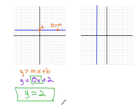Notice y equals 2 is a horizontal line that goes through the point 2 on the y-axis. We can use a similar logic on this next example.